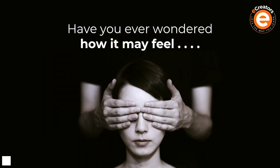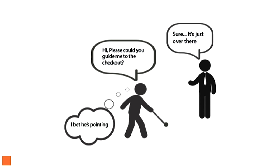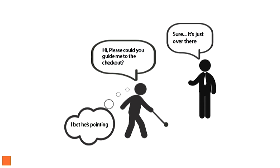Moving on to the first slide — it's looking at this person: have you ever wondered how it may feel to actually have a disability? This person sitting here not being able to see anything. Imagine what the internet would be like, scrolling through on our mobile phones if we were not able to see anything. There's a graphic of a person asking to be guided to the checkout, and the other person just saying 'it's over there' and pointing. That doesn't really help, and that's a similar sort of experience we can get from the internet if you have an impairment of some sort.